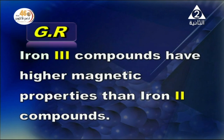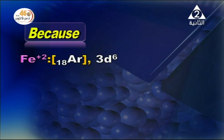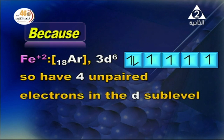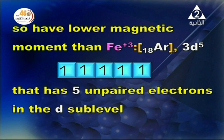Iron(3) compounds have higher magnetic properties than iron(2) compounds. Iron(2+) has electronic configuration [Ar] 3d6, containing 4 unpaired electrons. Iron(3+) has electronic configuration [Ar] 3d5, giving 5 unpaired electrons in the D sub-level, and therefore a higher magnetic moment.